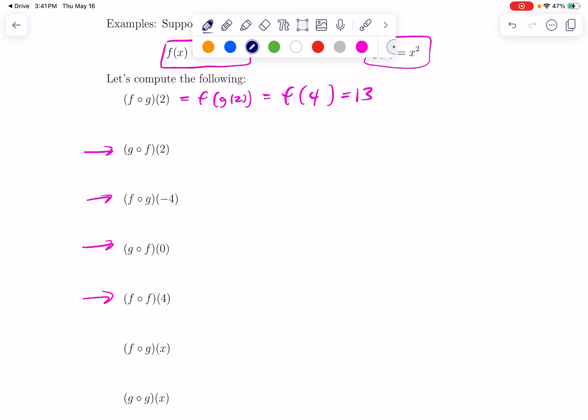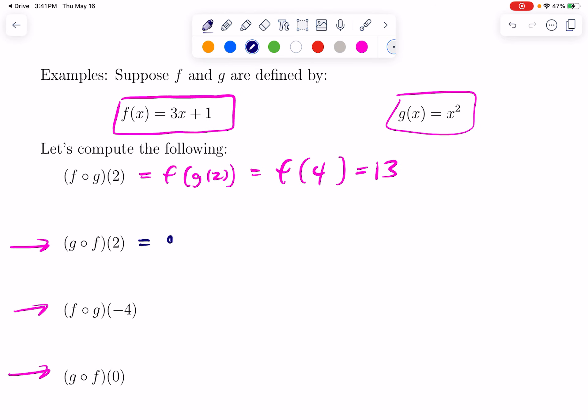Okay, I hope you've done that. So you can always get the ball rolling by just writing what this means with parentheses instead of that circle. This is G of F of 2. F of 2 by that formula is 7. And G is the squaring function. 7 squared is 49.